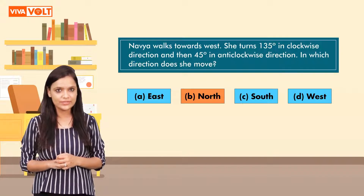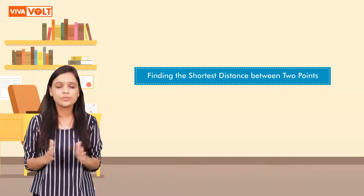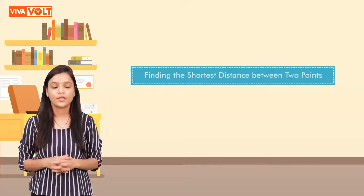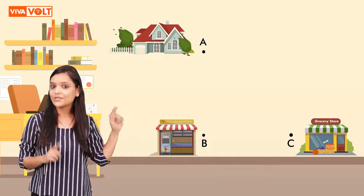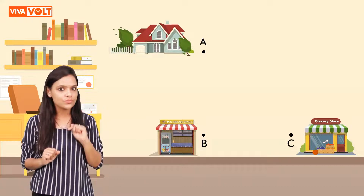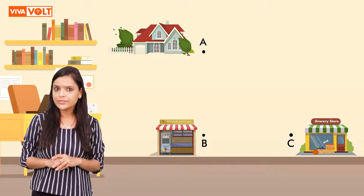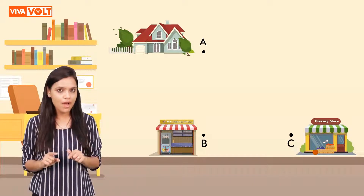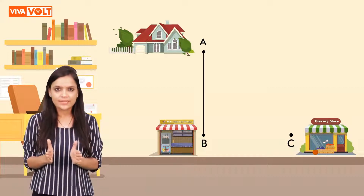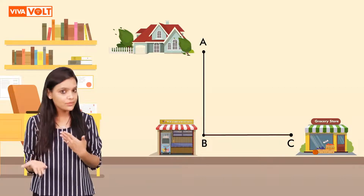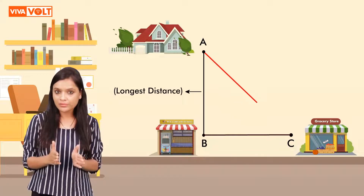After learning about directions, now let's understand how we can find the shortest distance between two points. Look at this figure. Imagine that point A is your house, point C is a grocery store, and point B is an ice cream shop. In order to reach the grocery shop from your house, you can use two paths. First, you go to the ice cream shop and then to the grocery store. Second, you can take the path shown directly from your house to the grocery store.